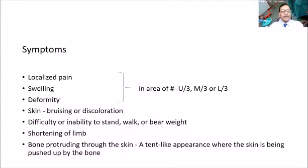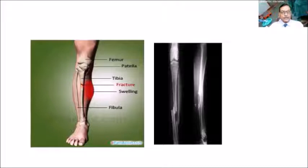Symptoms include pain, swelling, and deformity at the site — whether upper, middle, or lower third must be ascertained. Because the anteromedial surface is subcutaneous, bruising or discoloration may be found. The patient will be unable to stand or walk, and there will be shortening of the limb. The bone can protrude through the skin, or there may be a tent-like appearance where the skin is being pushed up by the bone.